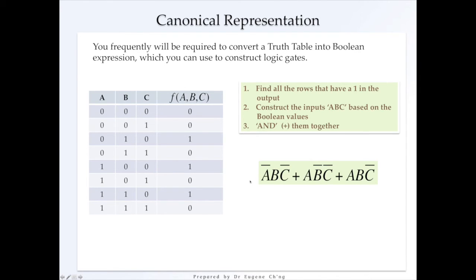So we have the first one is this. So we construct that, so it's NOT A, B, and NOT C. The other output is 1.